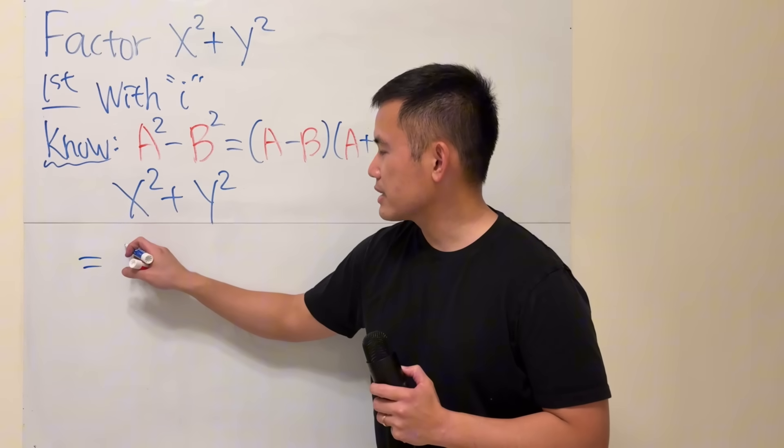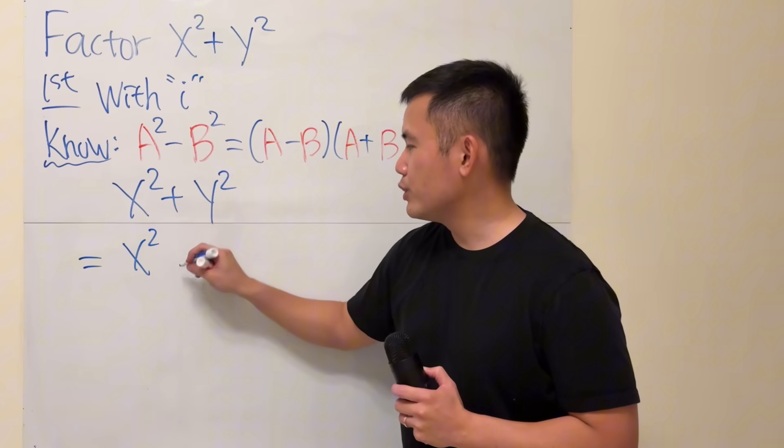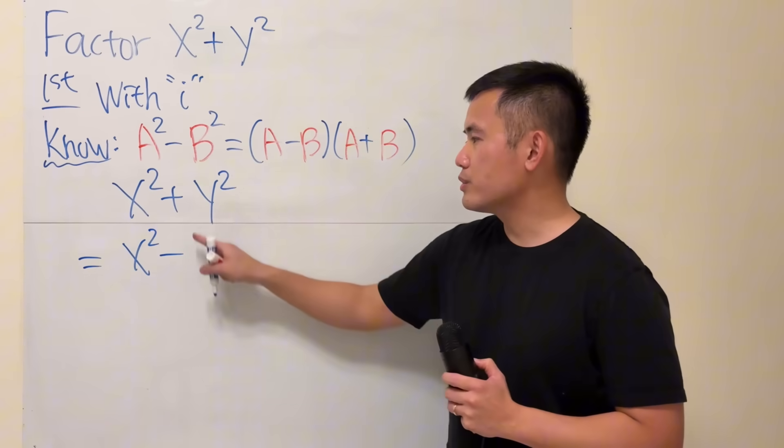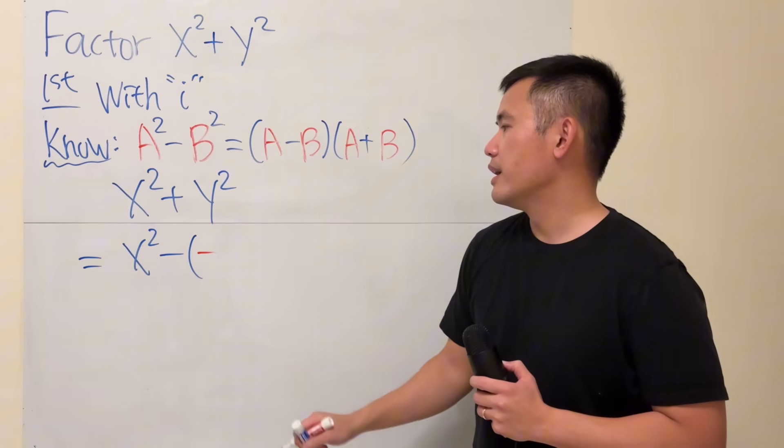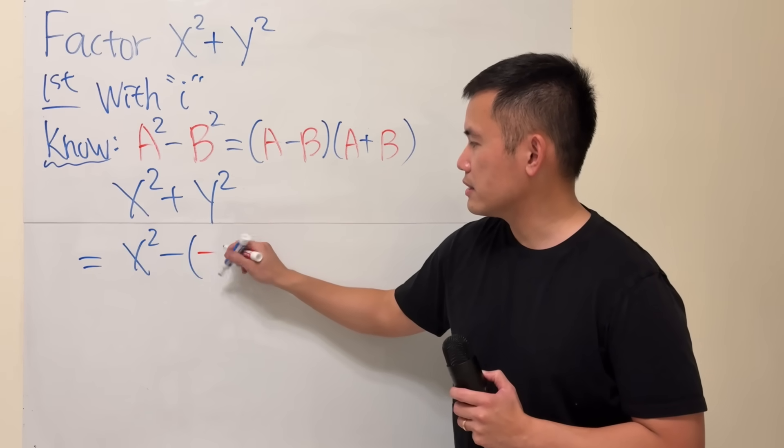I'm going to keep this as x squared, and I really want to have a minus. Well, don't worry, the plus is the same as minus minus. And then we still have the y squared like this.